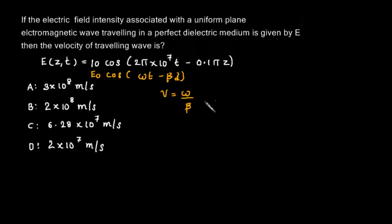So this we can reduce it as 2π × 10^7 by 0.1π. That will be 2 by 0.1, which is 20, which equals 2 × 10^8 meters per second.